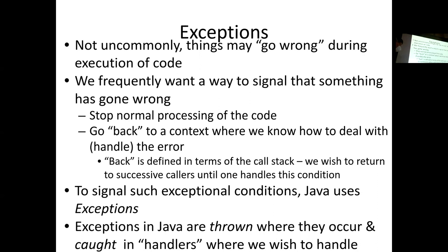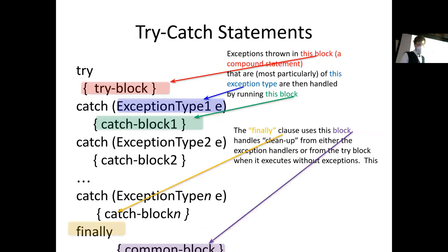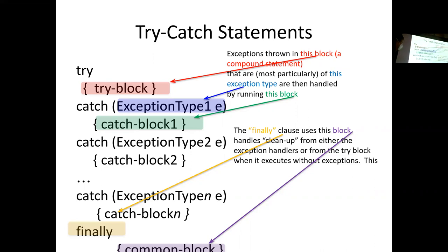Here we're dealing with truly exceptional conditions. They're not profoundly rare, but things may go wrong and we have to handle it. We want a way to signal that something has gone wrong — stop processing the code and go back to some context where we know how to handle it. The idea is we roll up the call stack: A calls B, B calls C, C calls D. Somewhere along that line, there might be something that knows what to do — connect to a backup database, use the local database, or put an error message to the user. In Java and many other languages, exceptions are thrown when they occur and caught and handled.